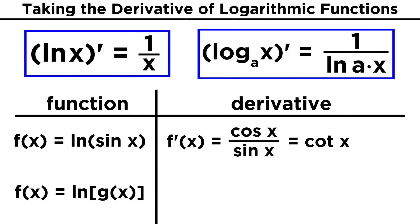This means that when we take the derivative of the natural log of any function, like the natural log of G of X, the answer will be the derivative of what's inside the log over what was originally inside, or G prime of X over G of X.